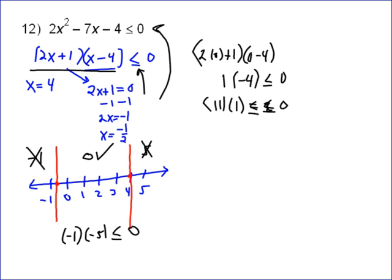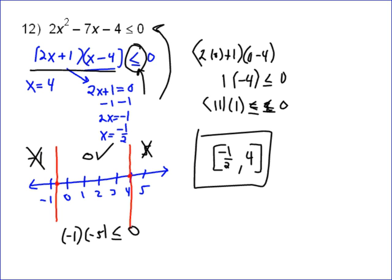So, the only place this works is between negative 1 half and 4. It's less than or equal to, so we're going to use brackets. And it's going to be between negative 1 half on the bottom side, and then 4 on the high side. And that's your answer, negative 1 half to 4. All the numbers between negative 1 half and 4 are the correct solution.